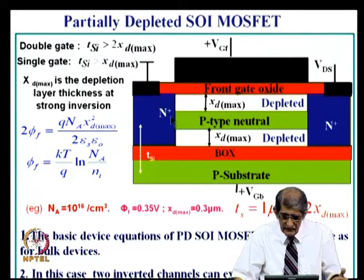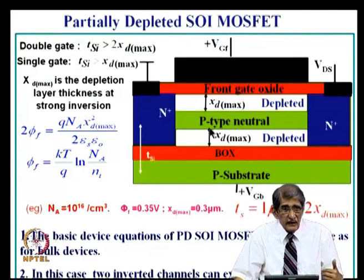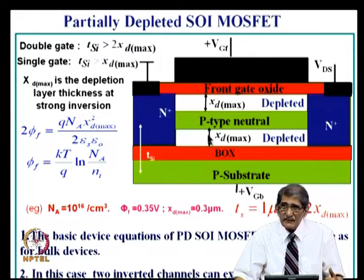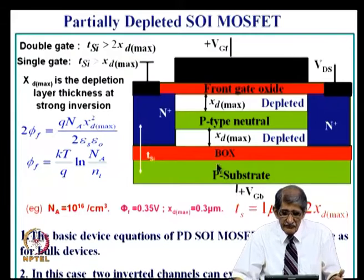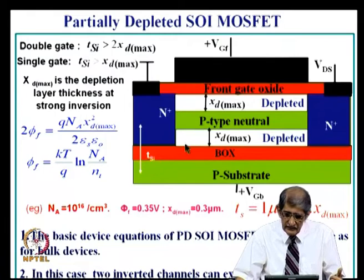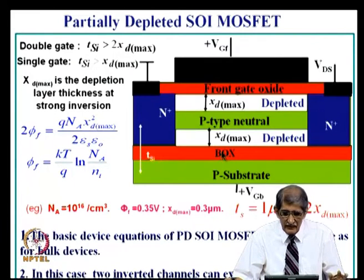If we also apply the back gate to deplete from the back side and invert the back channel, then one portion — X_t_max — is depleted by the front gate, and another portion is depleted by the back gate. Both the top and bottom channels have inversion layers, but there is no coupling between the two regions — they are isolated. That is the partially depleted case. It is like putting two MOSFETs in parallel.